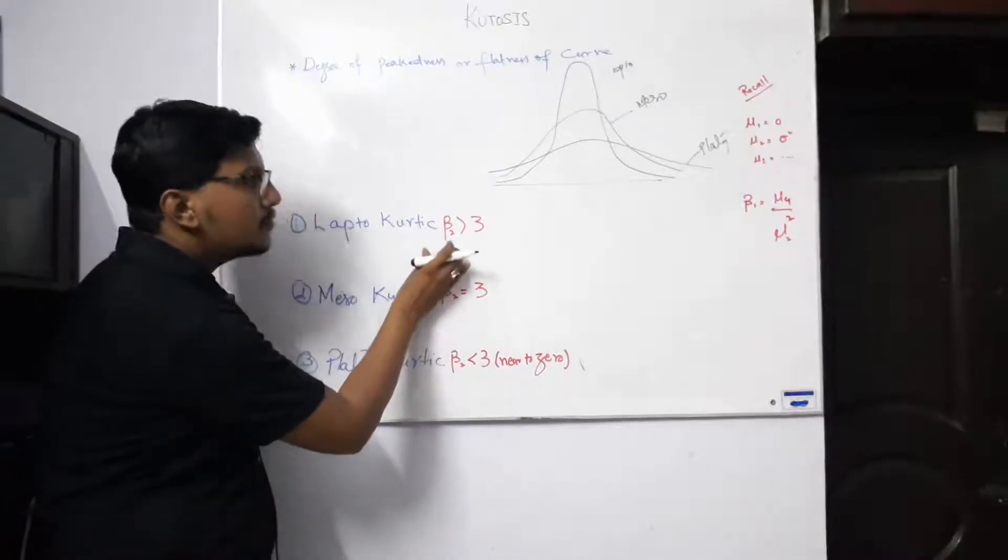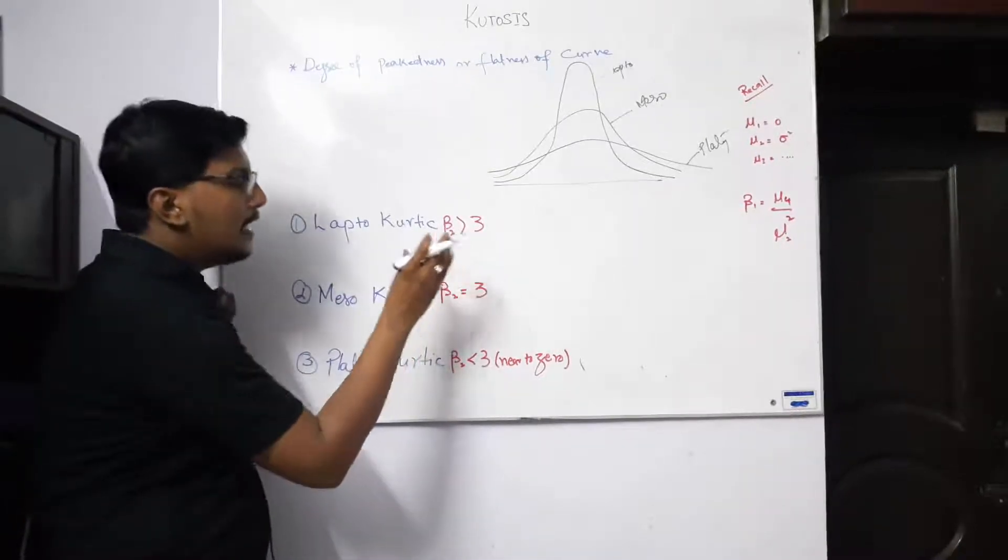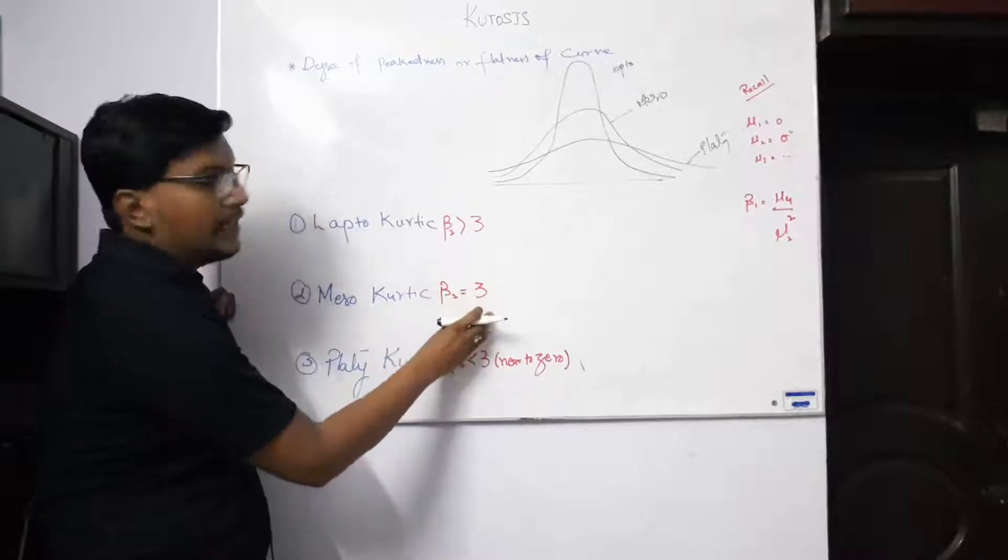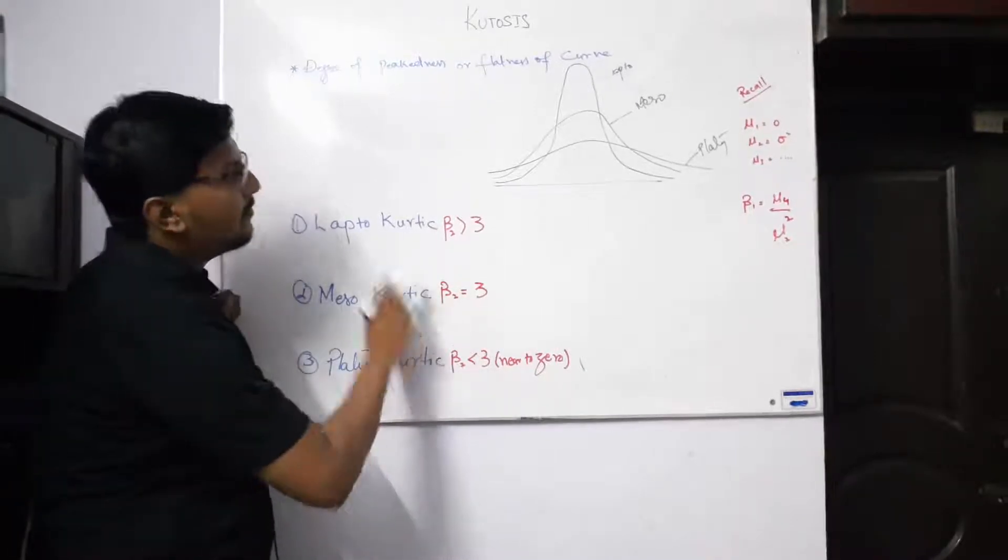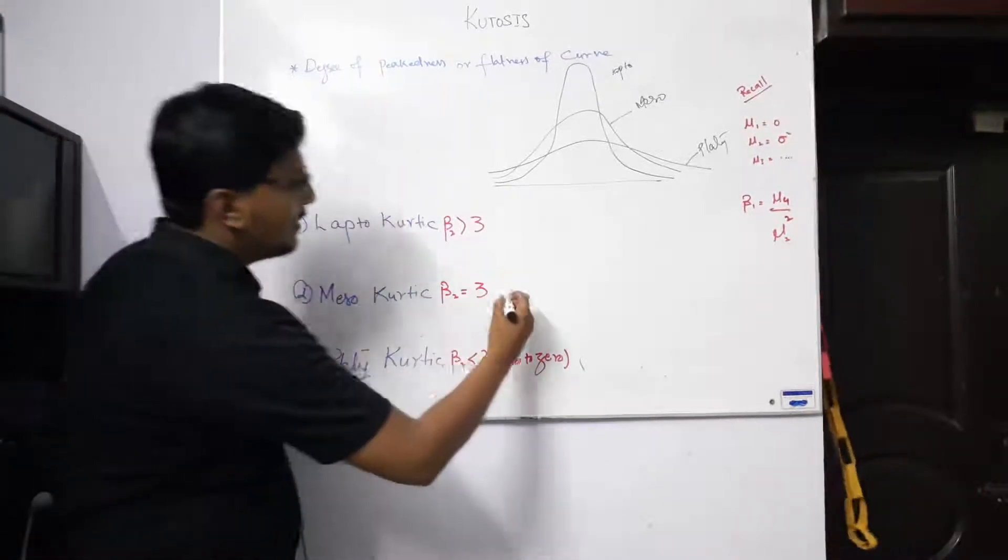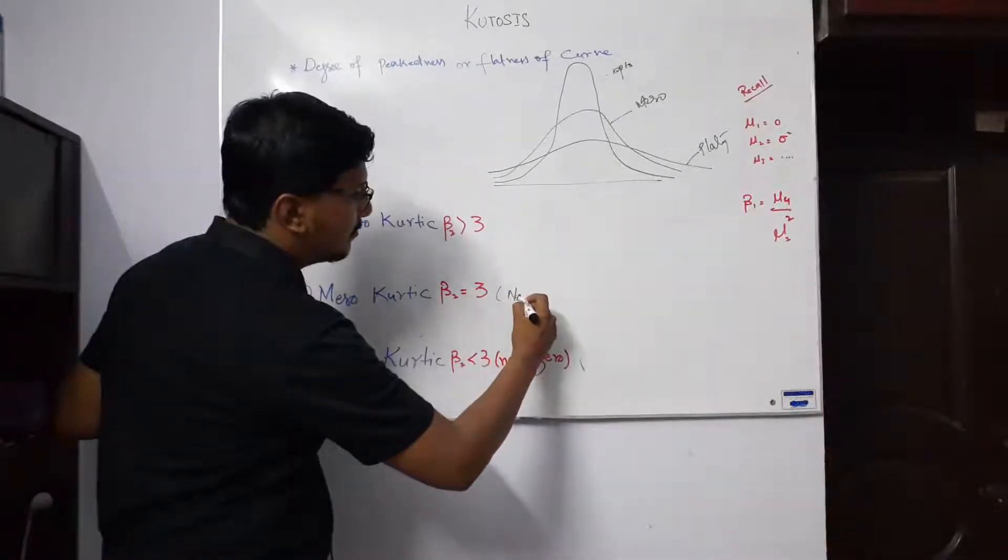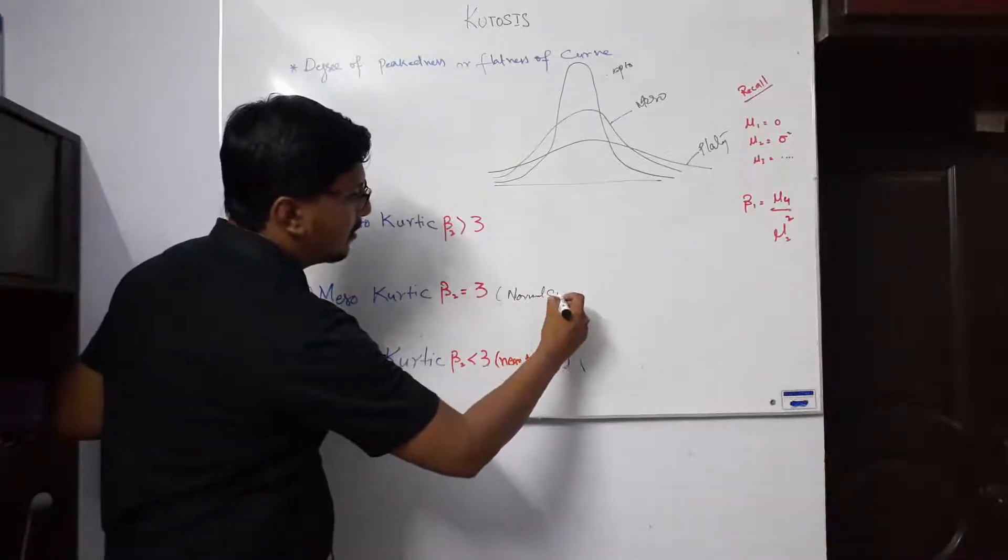The kurtosis value is exactly 3, so we achieve the mesokurtic. That means this is called the normal curve.